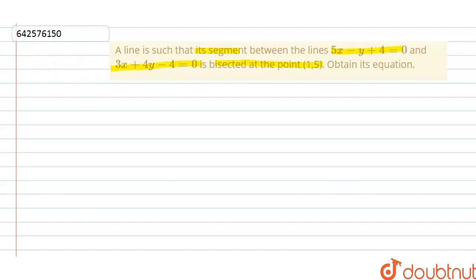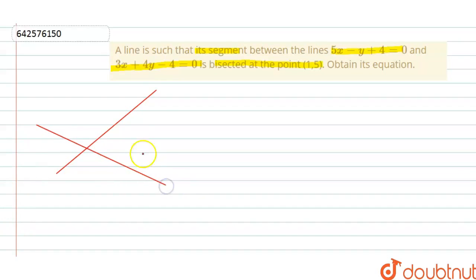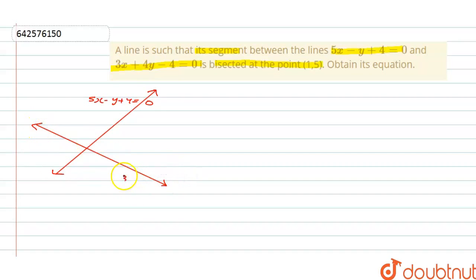First of all, two lines are given to us, so let's draw them. Suppose the two lines are like this. This is the first line — 5x minus y plus 4 equals 0 — and the equation of the second line is 3x plus 4y minus 4 equals 0. It is told in the question that a third line cuts both of these lines, so let's draw that.